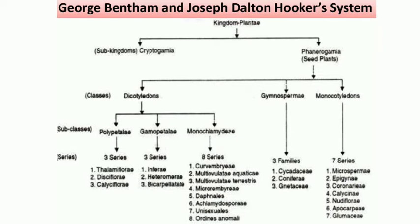Gymnosperms are divided into three families. Monocotyledons — Microsperms — are divided into seven series: Microsperma, Epigynae, Coronariae, Calycinae, Nudiflorae, Apocarpeae, and Glumaceae — seven series under Monocotyledons.